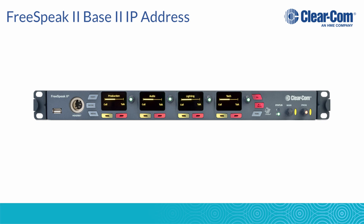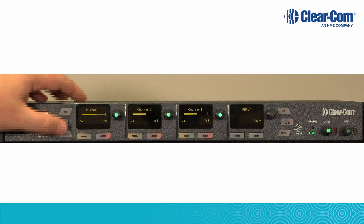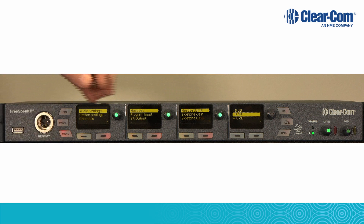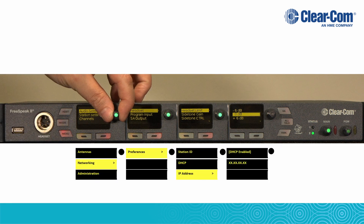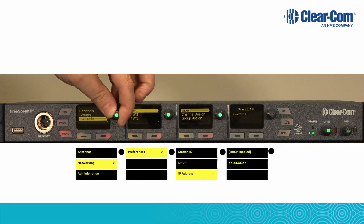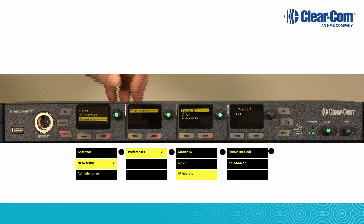To access the CCM, you'll need the IP address of the Freespeak 2 base. From the front panel, press Menu, then use the first volume knob to select Networking.